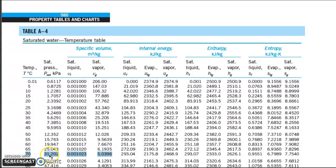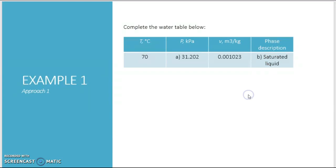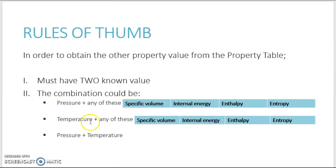So the phase is actually saturated liquid. You can straight away read the pressure as 31.202 kilopascal. The phase description is saturated liquid line. This is for the first approach when you are given temperature and one of these extensive properties. In the next video, I'm going to show you the other approaches.